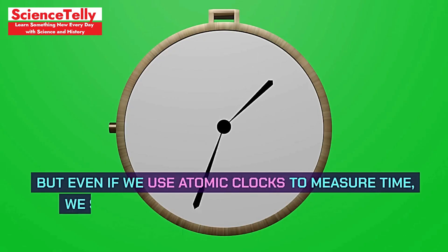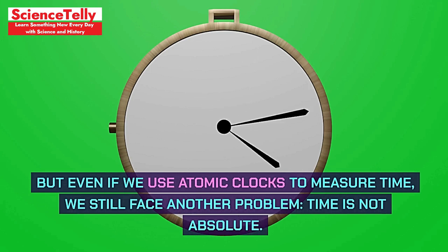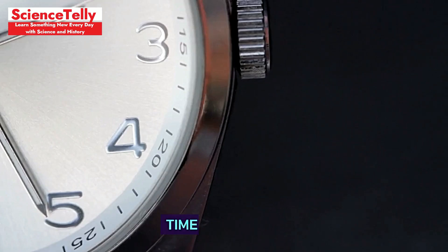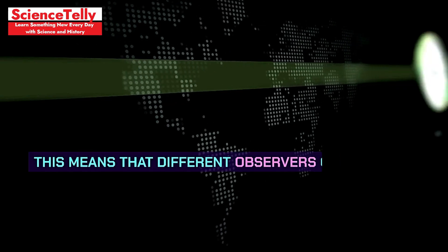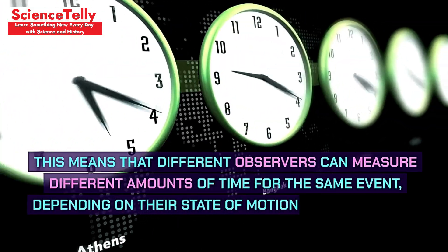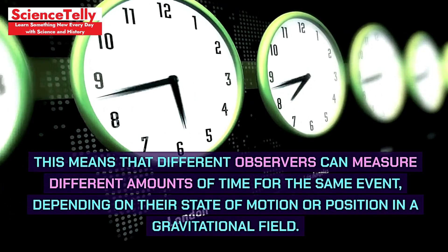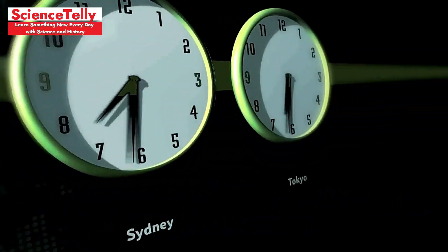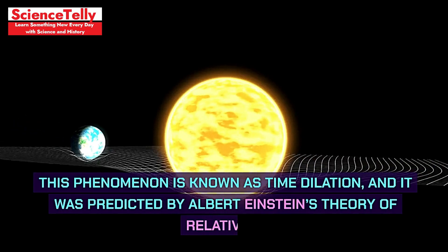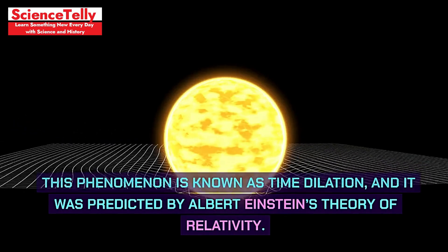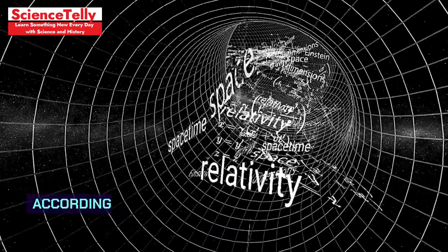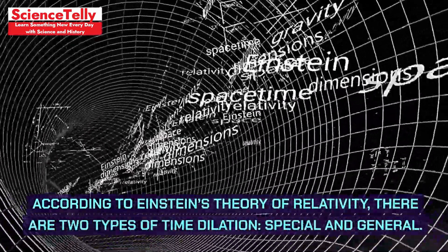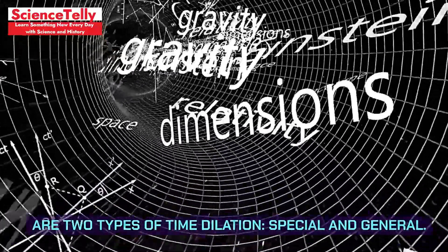But even if we use atomic clocks to measure time, we still face another problem: time is not absolute — time is relative. This means that different observers can measure different amounts of time for the same event, depending on their state of motion or position in a gravitational field. This phenomenon is known as time dilation, and it was predicted by Albert Einstein's theory of relativity. According to Einstein, there are two types of time dilation: special and general.